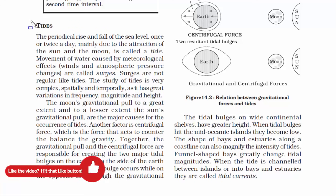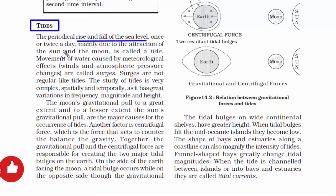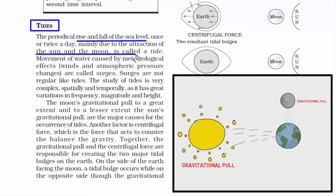The next topic is tides. A tide is the rise and fall of the sea level. It occurs once or twice a day, and the reason behind it is the gravitational attraction of the sun and the moon.